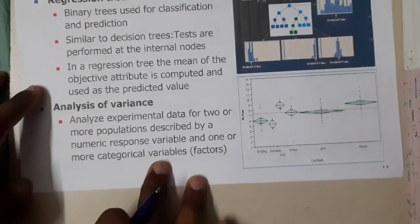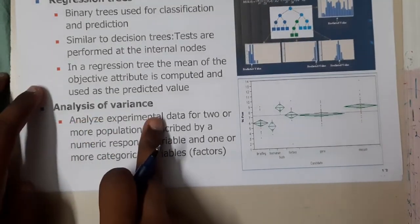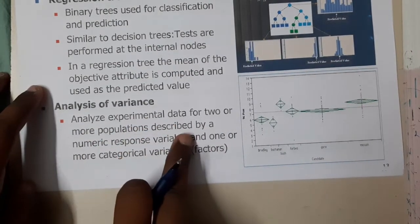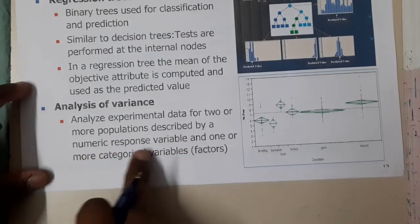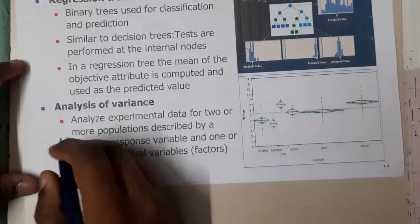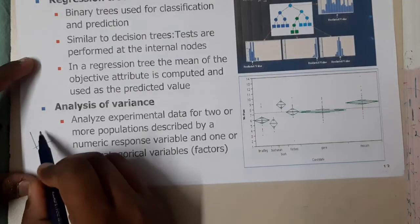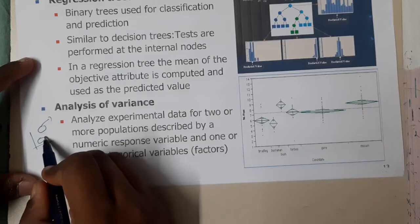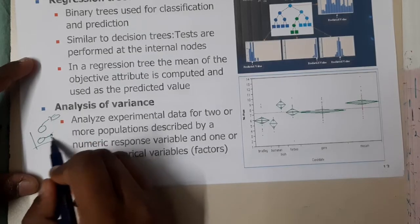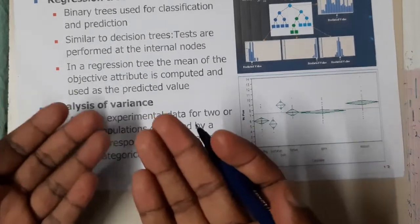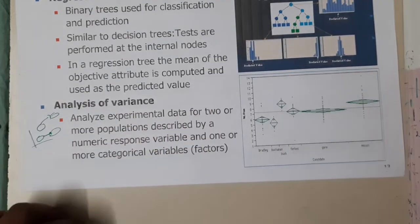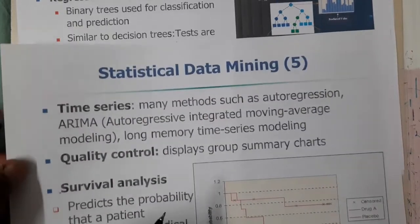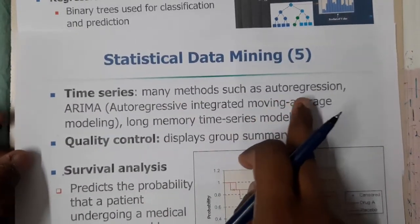The next is analysis of variance — analyzing experimental data for two or more populations described by numerical response variables. If there is a huge dataset, you take one part and another part, calculate the variance for each, and then analyze whether there is any relation between them. That is analysis of variance.